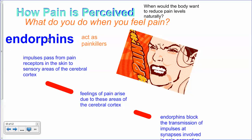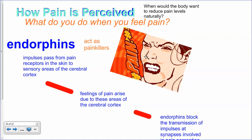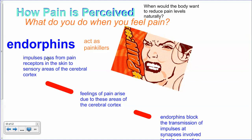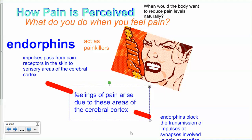What normally happens is you have something called endorphins — these are natural painkillers. Your body recognizes that not all pain signals are life-threatening. Impulses pass from pain receptors in the skin to sensory areas of the cerebral cortex to help you detect pain. The feelings of pain arise due to those areas of the cerebral cortex being stimulated and sending those messages to you, and so you perceive that as actual pain.